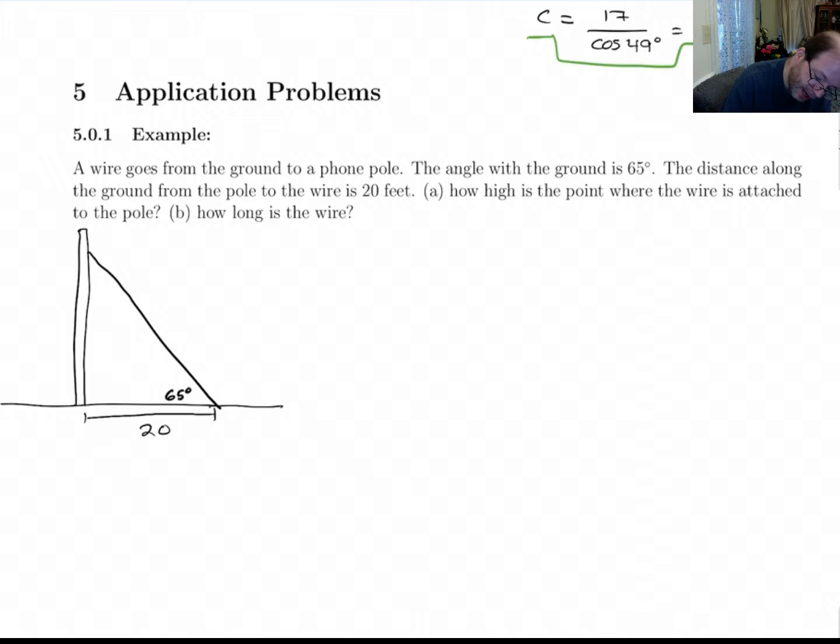Part A says, how high is the point where the wire is attached to the pole? Okay, so I'm going to call this h, or height. So part A is asking us to find h. So we look at the situation and we see what do we have. In relation to this angle here, we've got the adjacent side here, and we're supposed to find the opposite side. So what we need is the trig function that relates adjacent and opposite. That would be tangent.